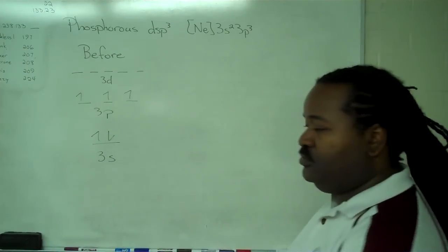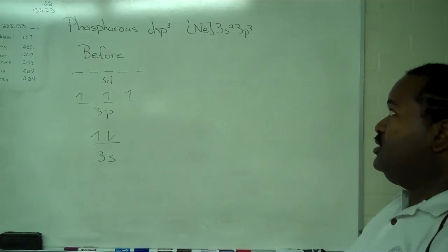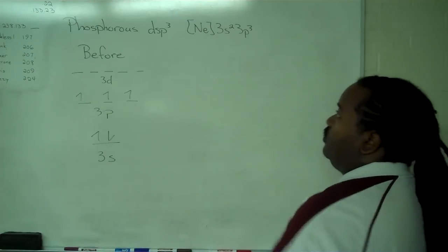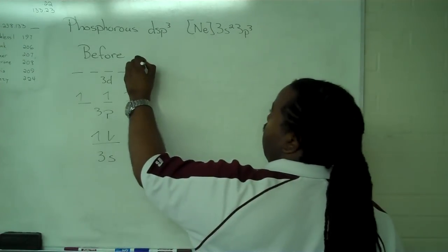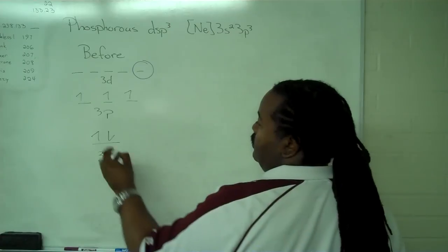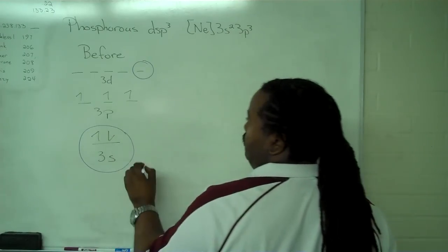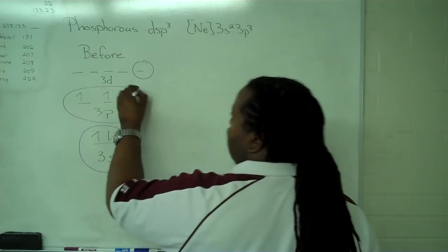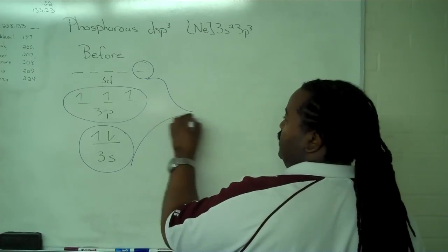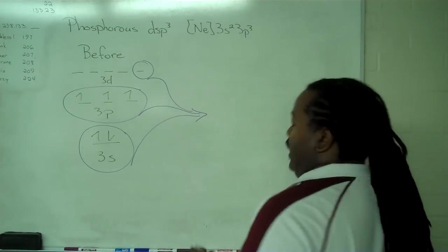But we still have five of those. Now because this is dsp³, we're going to select one of the d orbitals, one s orbital, and all three p's. And we'll combine all of these to get our after picture.